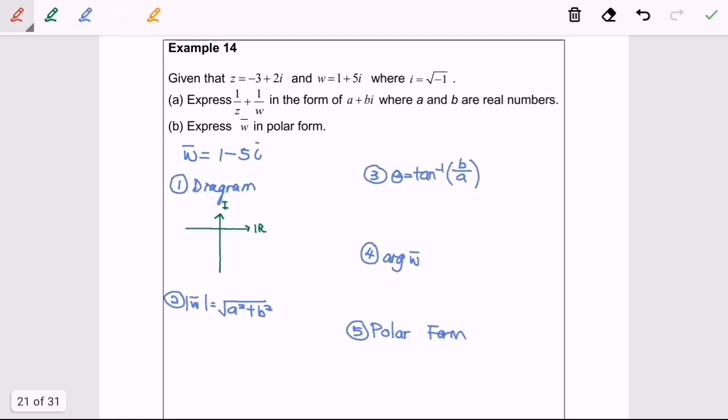Step number 1, we are going to locate the position of conjugate of w. So in this case, the location is in the fourth quadrant. So here we have our conjugate of w.